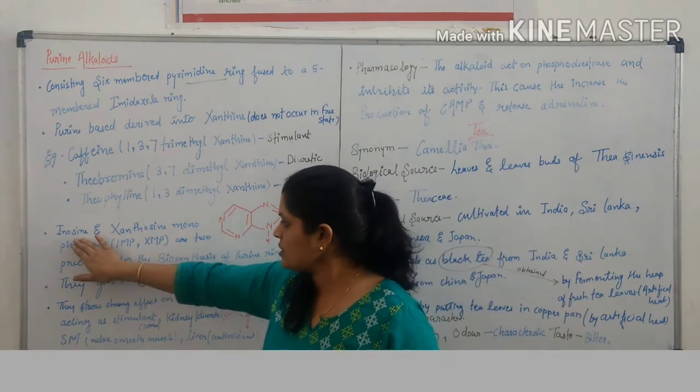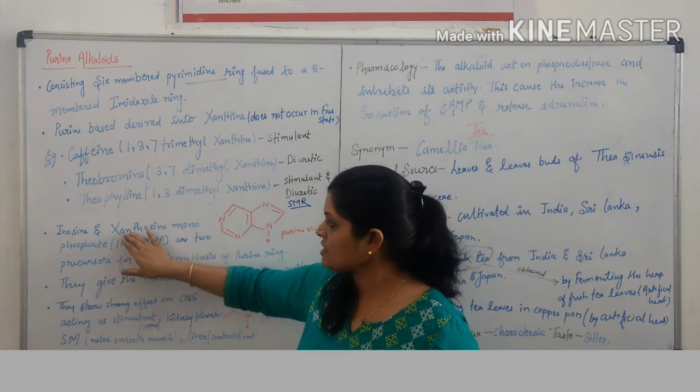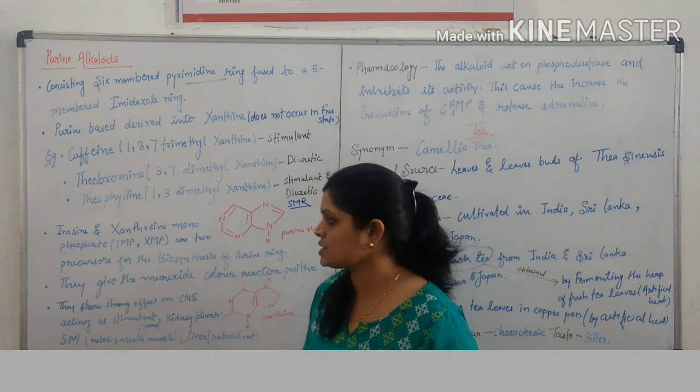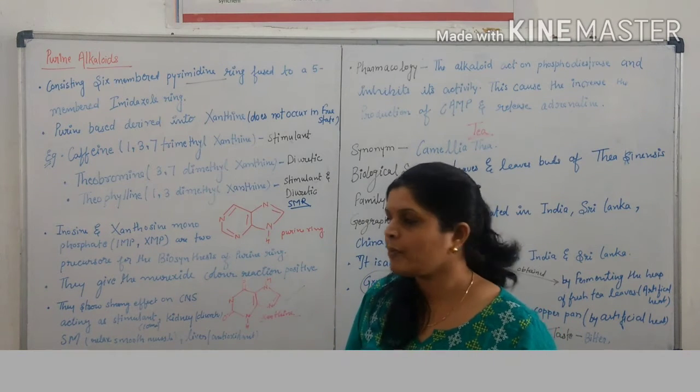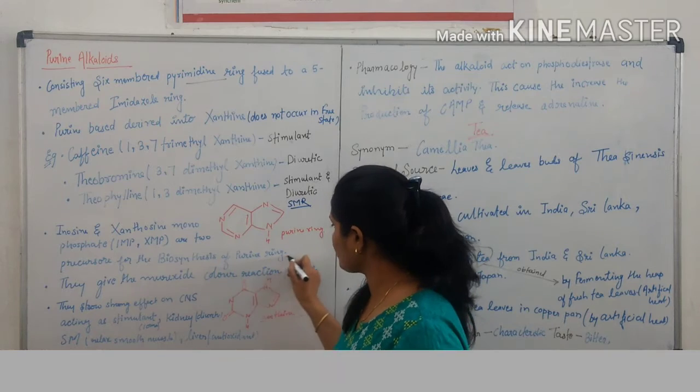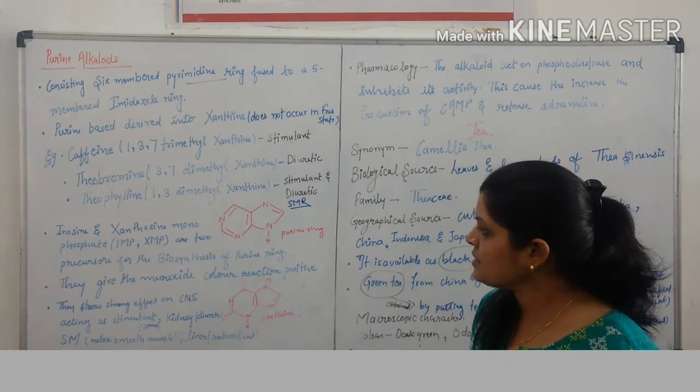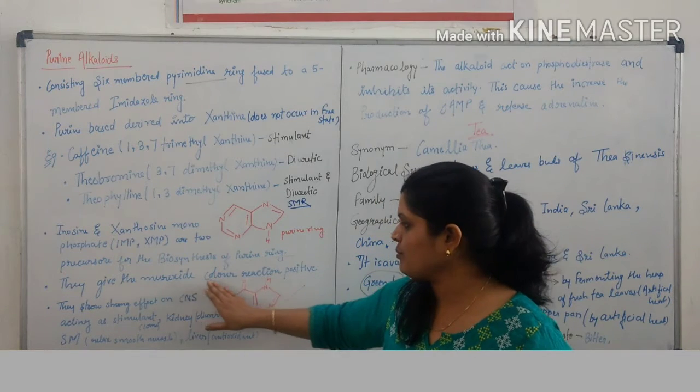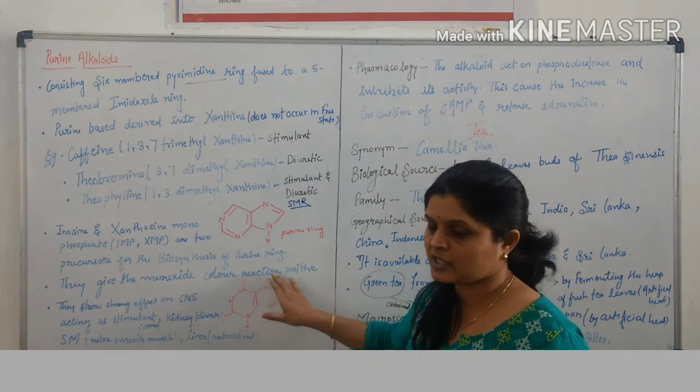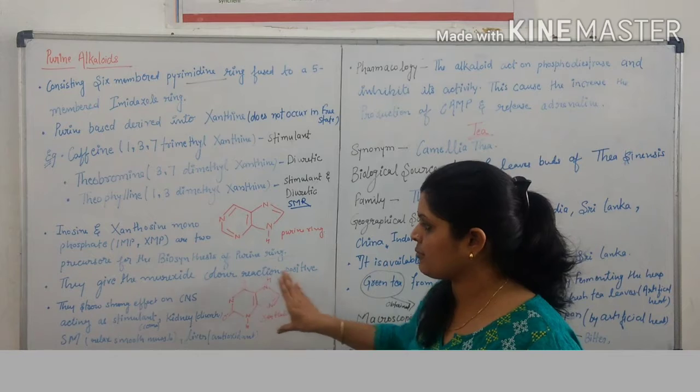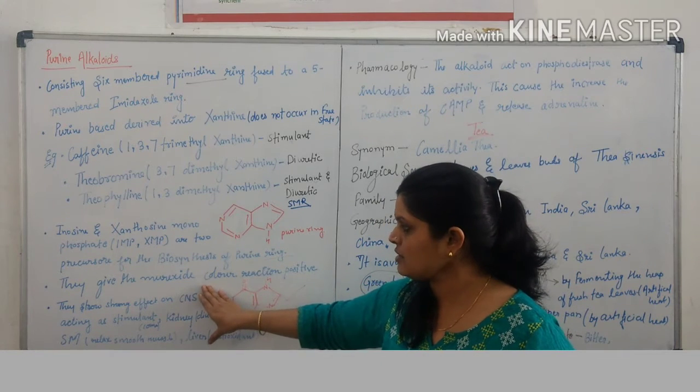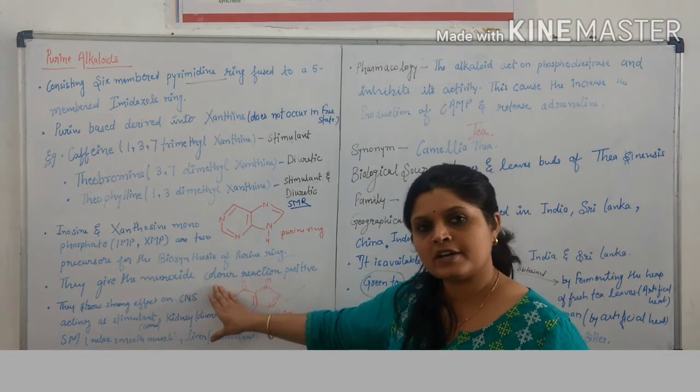Inosine monophosphate and xanthosine monophosphate are two precursors for the biosynthesis of purines. They give the murexide color reaction positive, that means it shows positive reaction with murexide reagent.